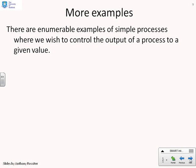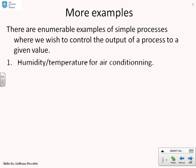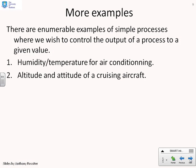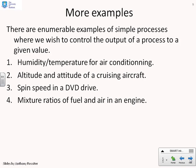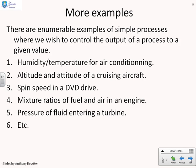There are many examples of processes where we need to control the output to a given value: humidity and temperature for air conditioning (if those aren't right the room won't be comfortable); altitude and attitude of a cruising aircraft (legislation requires the aircraft to stay at a precise altitude); spin speed in a DVD drive (if the speed is wrong the video will seem odd); mixture ratios of fuel and air in an engine (important for performance and reducing pollution); and fluid pressure entering a turbine for efficient operation. In all these cases, getting the output wrong could be disastrous or expensive.